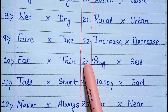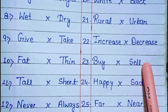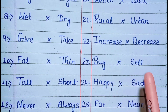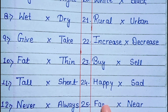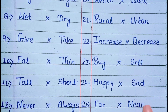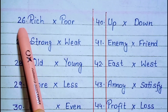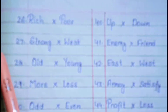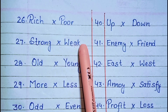23. Buy, sell. 24. Happy, sad. 25. Far, near. 26. Rich, poor. 27. Strong, weak.